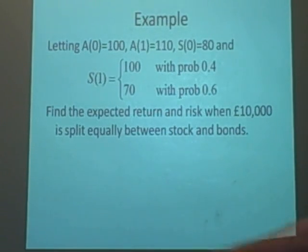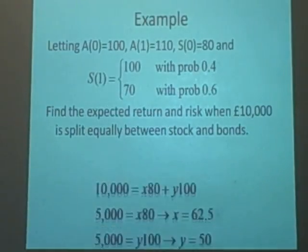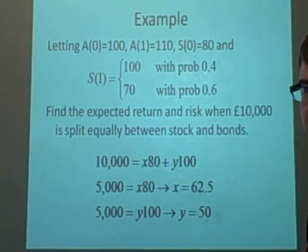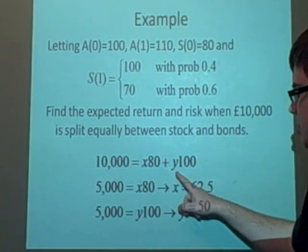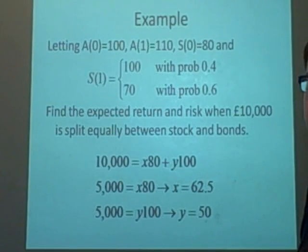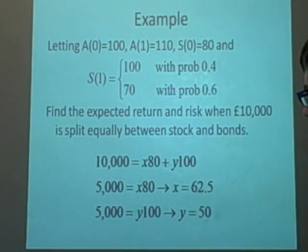We want to find the expected return and the risk when we invest £10,000 split equally between the stock and bonds. So we're going to put £5,000 in the stock and the bonds. So we've got £10,000, this is the X, this is the number of stocks we buy times 80 plus the number of bonds we buy times 100. We can easily see that this one here is going to be 50, because we're giving £5,000 to each, and the number of stocks is 62.5.